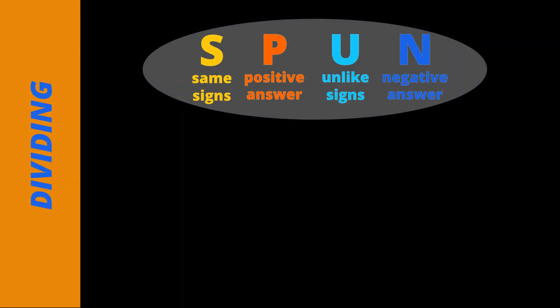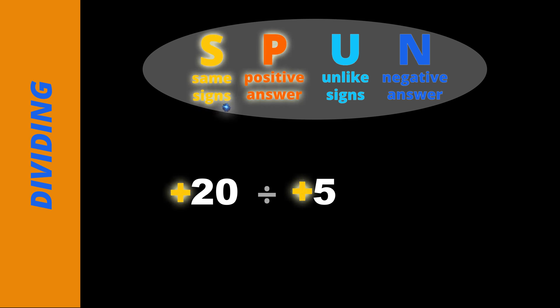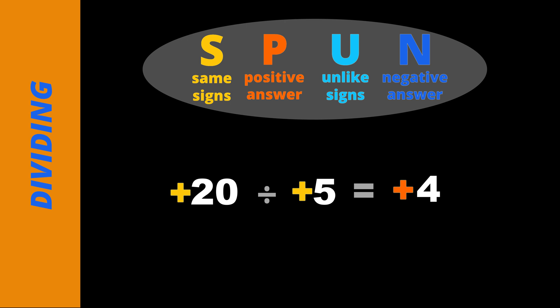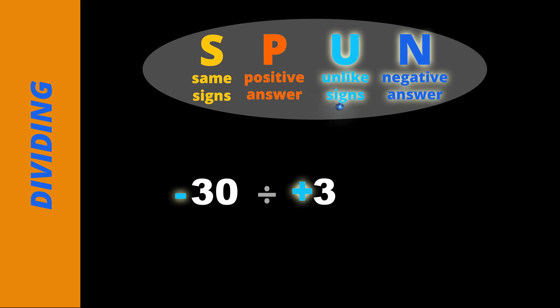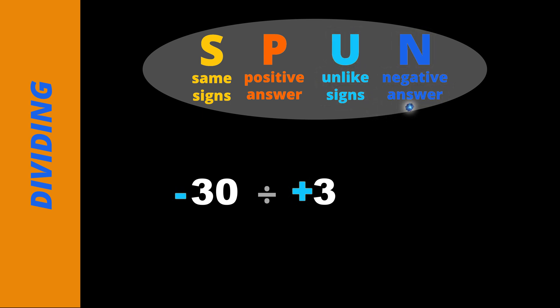Now let's divide positive and negative numbers — we'll use the SPUN rule again. $20 is shared by 5 people, that's positive 20 divided by positive 5. The signs are the same, both positive, so the answer is positive. 20 divided by 5 is 4, so $20 divided by 5 people means they get $4 each. Altogether I owe $30 to my 3 friends — how much do I owe each friend? That's negative 30 divided by positive 3. The signs are unlike, so the answer is negative 10. That means I owe each friend $10.